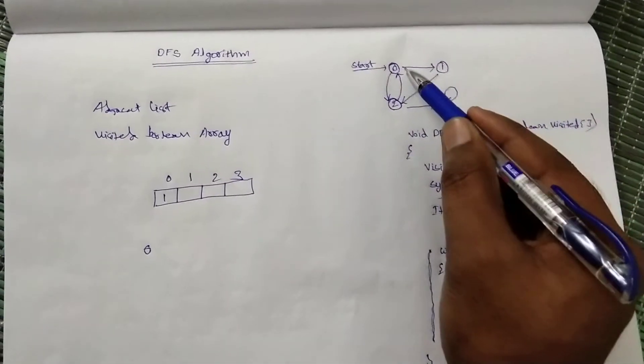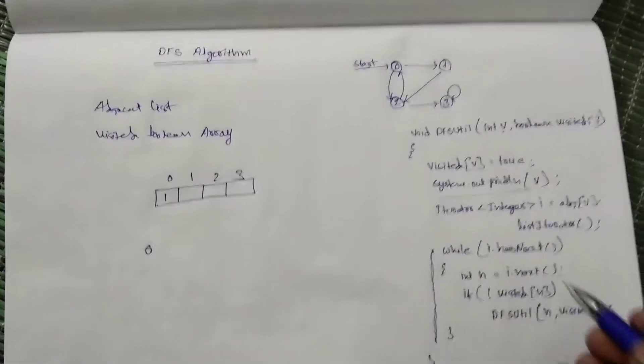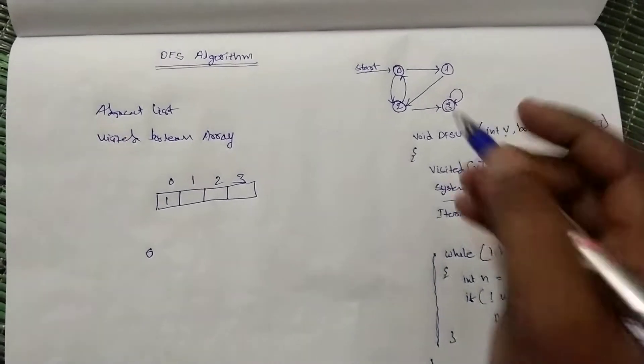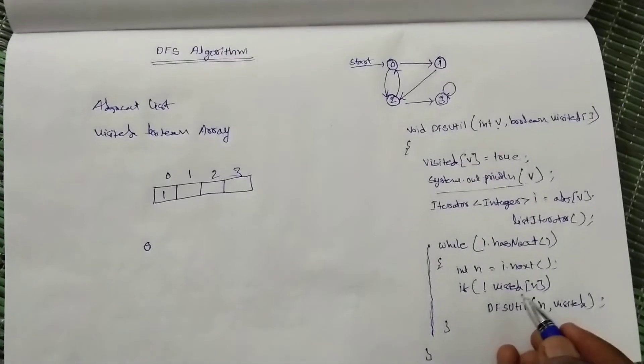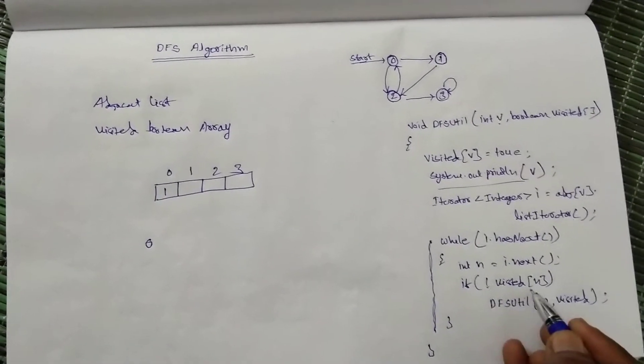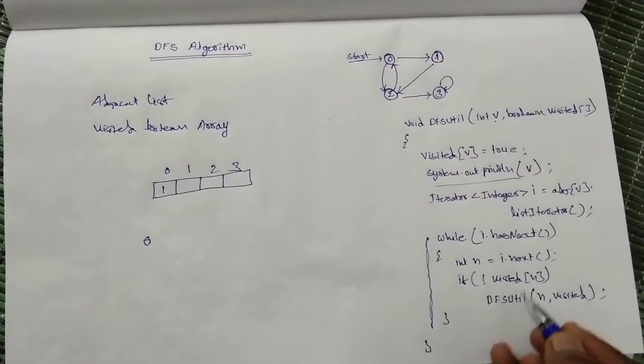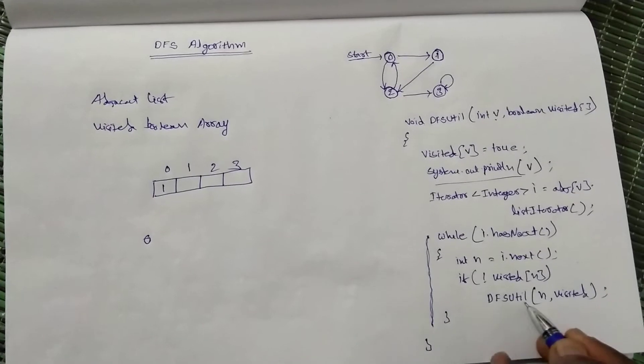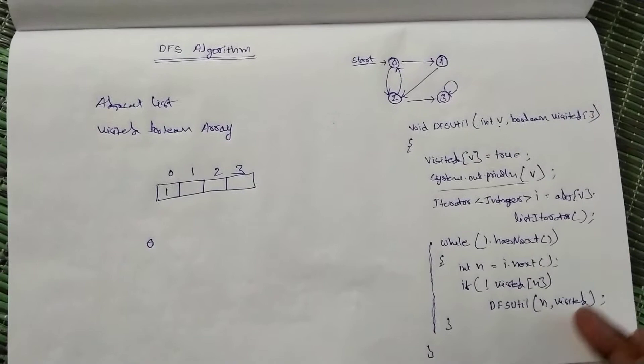Here, adjacent nodes of 0 are 1 and 2. So first it will get node 1. Let's take 1. Then it will check if 1 is visited or not. 1 is not visited, so it will call again DFS util. It will pass 1 and same array, then it will repeat.